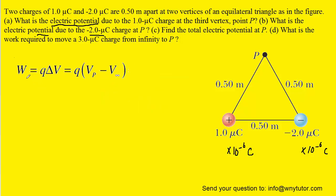For part D, we can calculate the work required to move a 3 microcoulomb charge from infinity to point P by remembering that the work done is simply equal to the product of the charge and the change in potential. Now by change in potential, we would mean the final potential minus the initial potential.